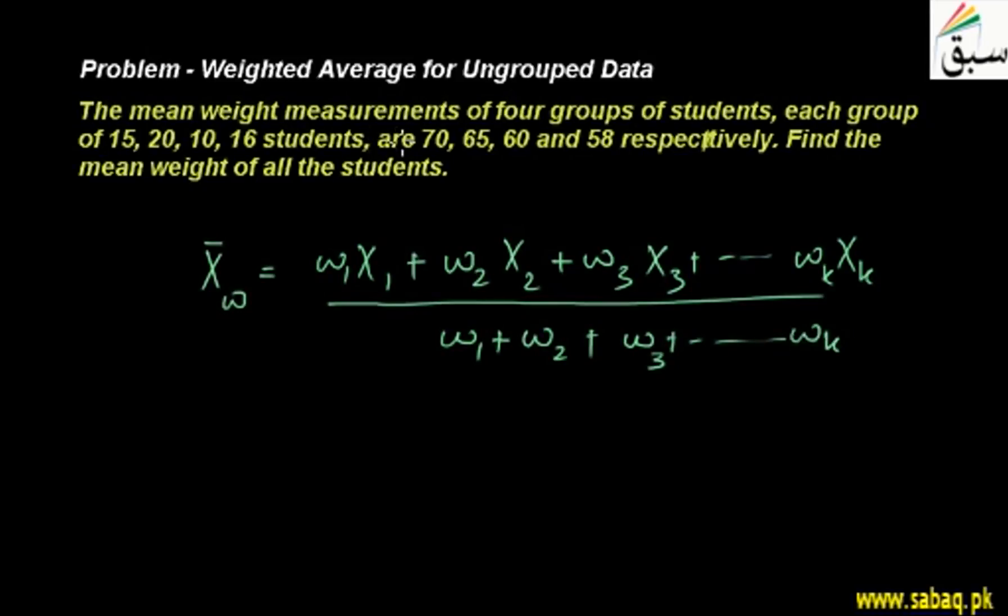Here we have measurements of 4 groups. Each group is 15, 20, 10 and 16 students. So, this weightage is weighted. It could be score, it could be test score, it could be height in inches. In this case, the weight would be measured.